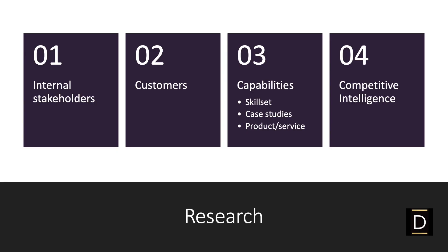Let's look at research first. There are four key areas to research in my opinion. The first one is internally. Ask your main stakeholders questions along the lines of: what do you think is your unique selling proposition, or USP? Why do customers buy from us? What unique value are we bringing to our customers? Or whatever other questions could be relevant to your business.